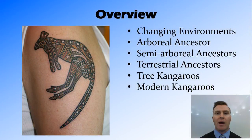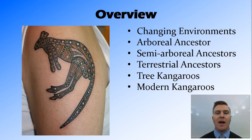We're going to talk about what the changing environment is, then look at some of the arboreal ancestors, moving to the semi-arboreal ancestors, and finally the terrestrial ancestors with tree kangaroos thrown in there, up to our modern kangaroo species.